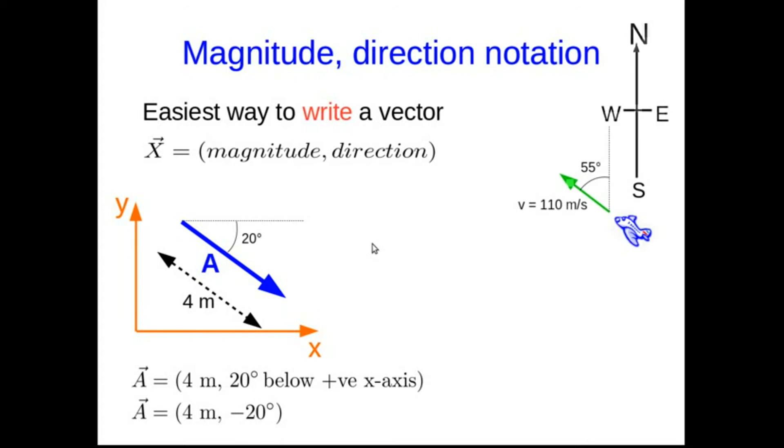Now just look at a different sort of situation. Here's an airplane flying, and let's say it's flying in this direction, and here's a compass. We could write this as 110 meters per second, 55 degrees west of north, or we could write that 35 degrees north of west.